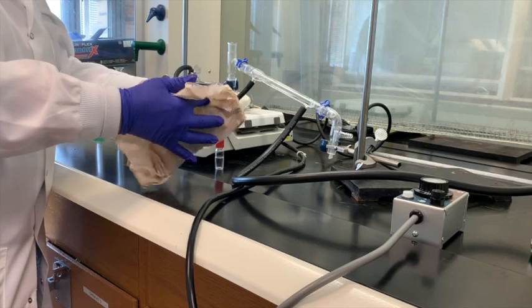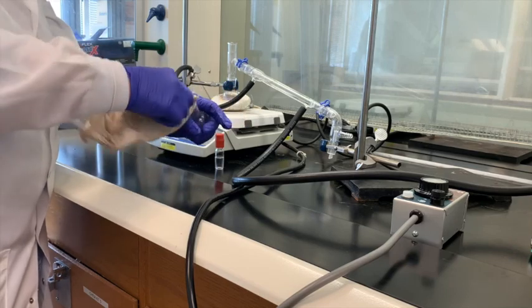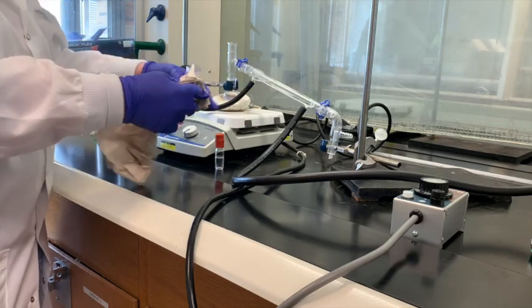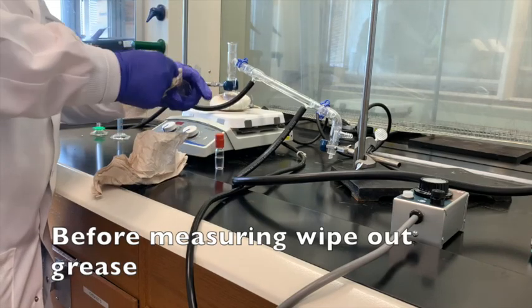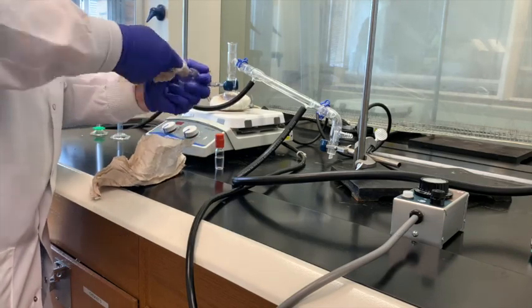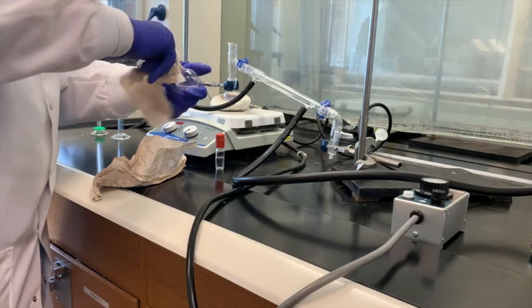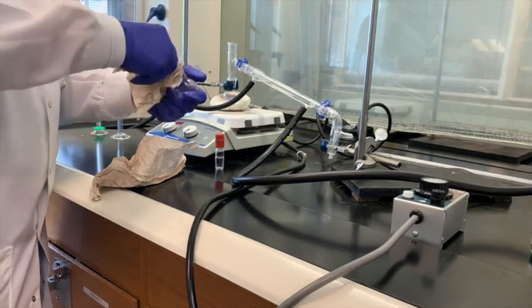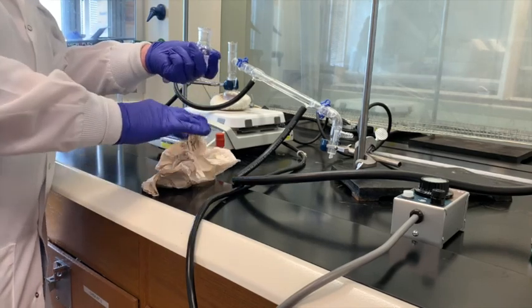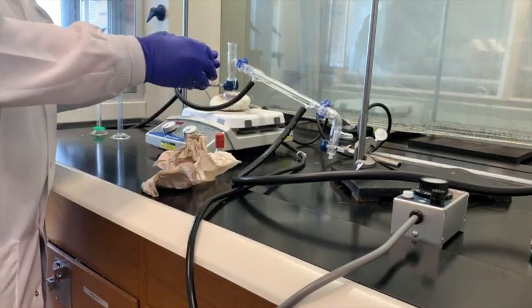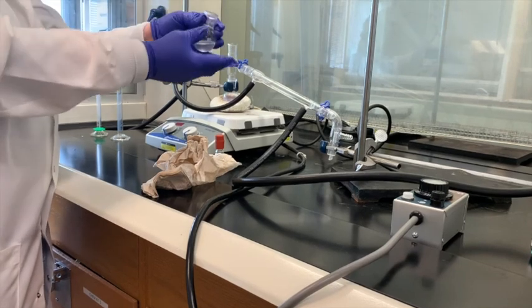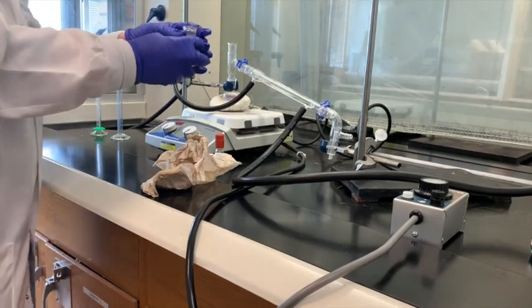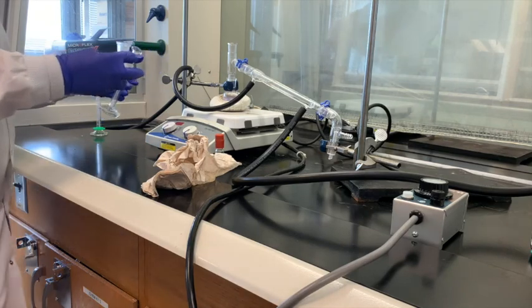This is the distillate that we just collected. I just want to also remind you that when you're separating, remember we had all these joints with grease. Before you do anything, like to measure anything or clean it, make sure that you take paper towel or chem wipes to get that grease out, because if you don't do that and you start to wash it, then that grease will be pushed down in the flask and it's very difficult to remove.